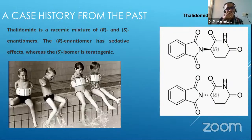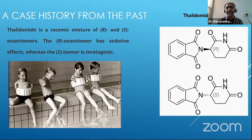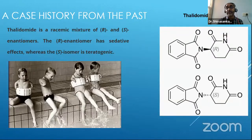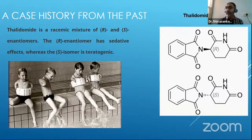This is a classical example which most of you would have come across — the thalidomide incident. The R-thalidomide was the one which was active; it was a good sedative and was administered with good results. But once it entered the body, the CH which is active racemized, and then the S-isomer was teratogenic.